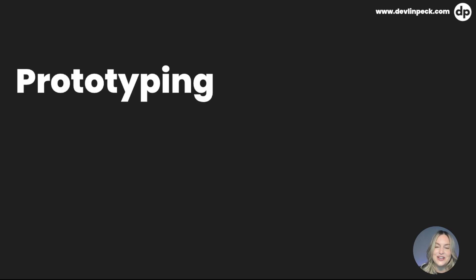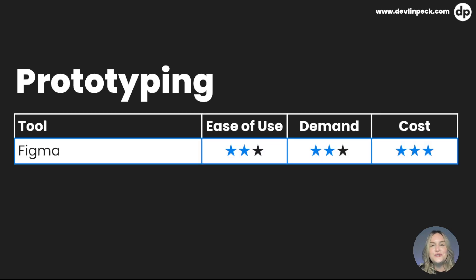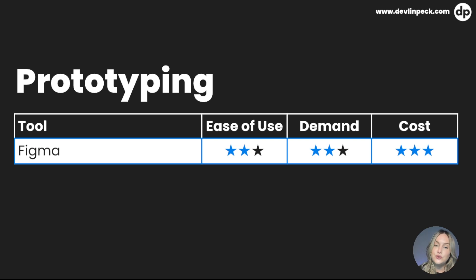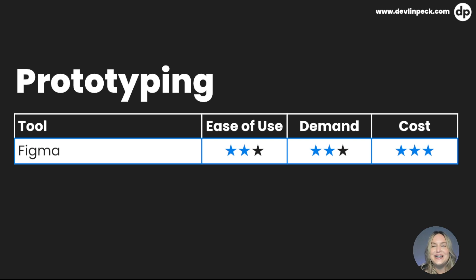Our next category is prototyping — all that fun visual design stuff. The first tool is Figma. It's rated neutral for ease of use. If you are just a beginner with Figma, it could be a little bit of a learning curve, but it's very easy to learn and pick up on, and the learning curve isn't super steep. The demand is neutral, though it might have higher demand in the future because it is becoming an increasingly popular tool. It is free — there are paid versions, but they offer a free version, which is always fantastic.